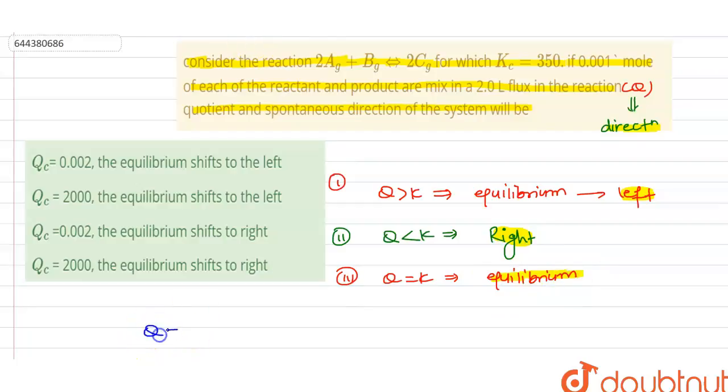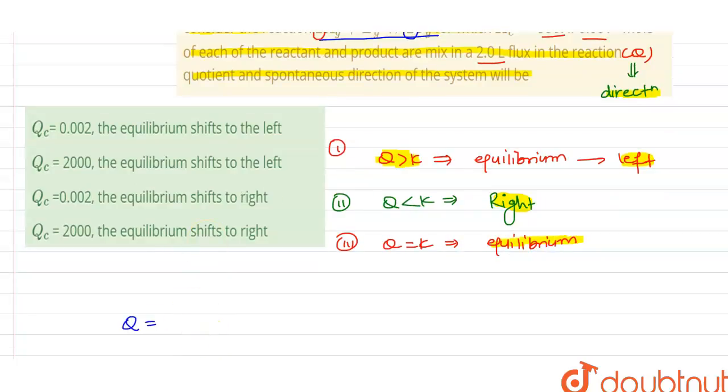Now here the question arises: how to find the value of Q? So Q can be calculated as we have to write the concentration of the product in numerator having the coefficient as a power, and we have to write the concentration of the reactant as a multiplication in the denominator.